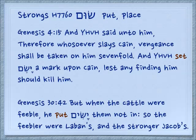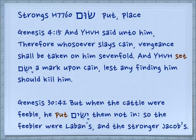Genesis 4:15: And Yehovah said unto him, therefore whoever slays Cain, vengeance shall be taken upon him sevenfold. And Yehovah set — yassim — a mark upon Cain, lest any finding him should kill him. The other form appears in Genesis 30:42: But when the cattle were feeble, he put — yassim — them not in. So the feebler were Laban's and the stronger were Jacob's.